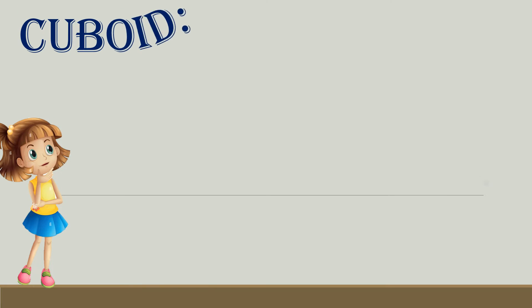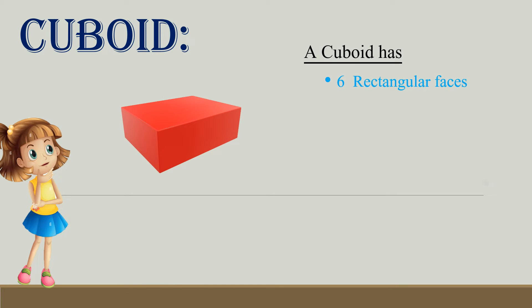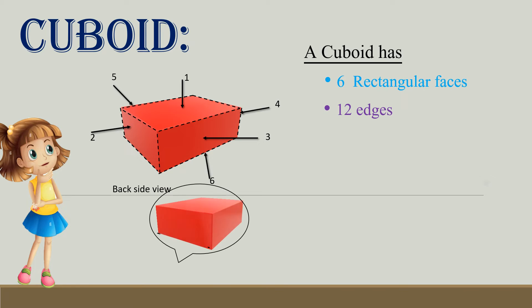Cuboid. A cuboid has six rectangular faces: 1, 2, 3, 4, 5, 6. 12 edges: 1, 2, 3, 4, 5, 6, 7, 8, 9 on the front side, and back side of cube 10, 11, 12. 8 vertices: 1, 2, 3, 4, 5, 6, 7 on front side, and back side there is 8th vertices.